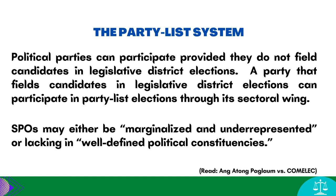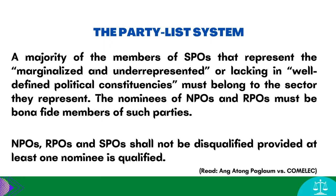A political party, whether major or not, that fields candidates in legislative district elections can participate in party list elections through its sectoral wing, which can separately register under the party list system and is linked to the political party through a coalition. Sectoral parties or organizations may either be marginalized and underrepresented or lacking in well-defined political constituencies — it is enough that their principal advocacy pertains to the special interests and concerns of their sector. The sectors that are marginalized and underrepresented include labor, peasant, fisherfolk, urban poor, indigenous cultural communities, handicapped, veterans, and overseas workers. The sectors that lack well-defined political constituencies include professionals, the elderly, women, and the youth. A majority of members of sectoral parties representing the marginalized and underrepresented must belong to the sector they represent.